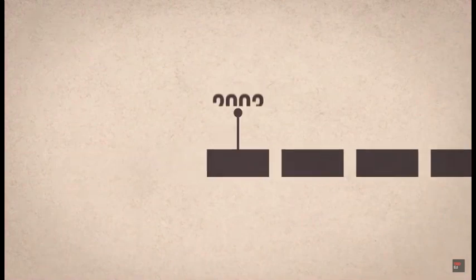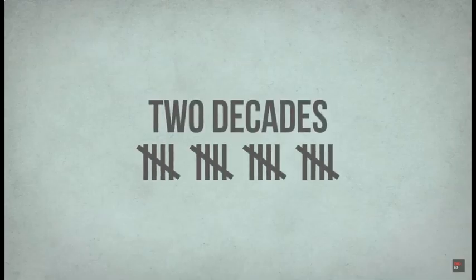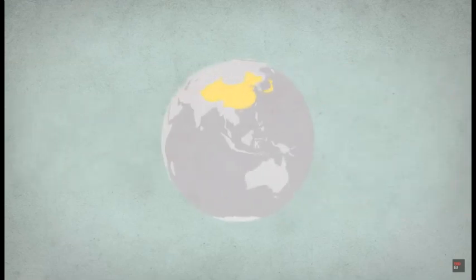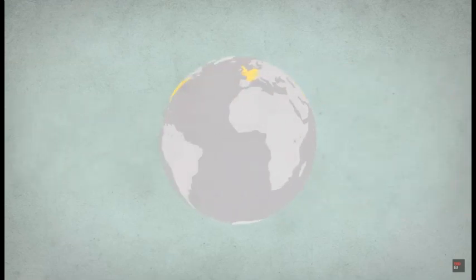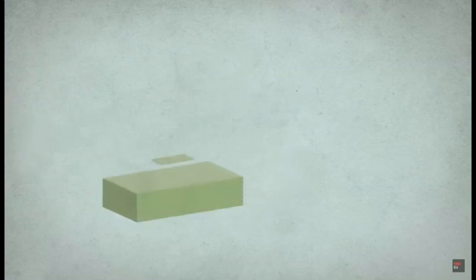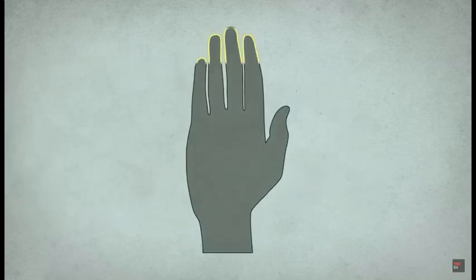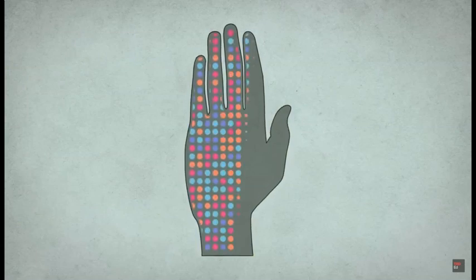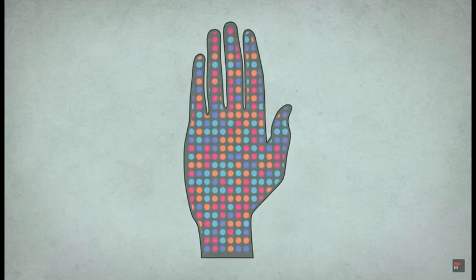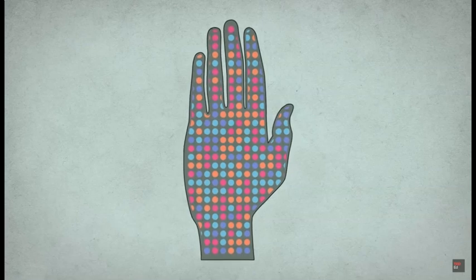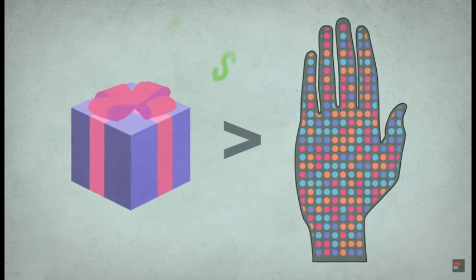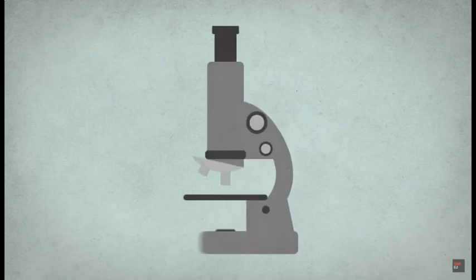The first human genome was sequenced about 10 years ago and was no easy task. It took two decades to complete, required the effort of hundreds of scientists across dozens of countries, and cost over three billion dollars. But someday, very soon, it will be possible to know the sequence of letters that make up your own personal genome in a matter of minutes and for less than the cost of a nice birthday present.